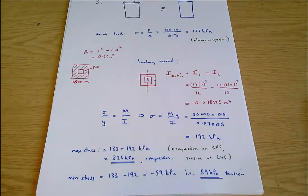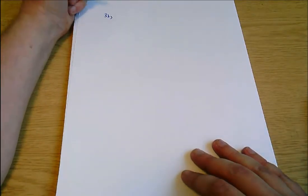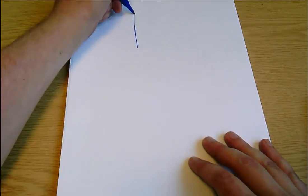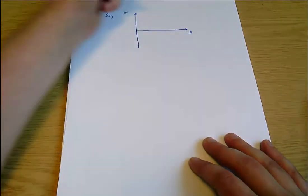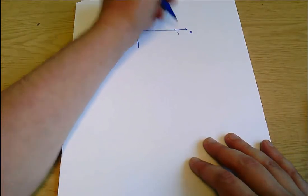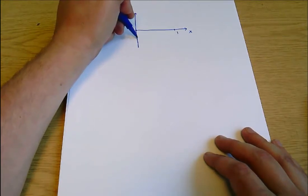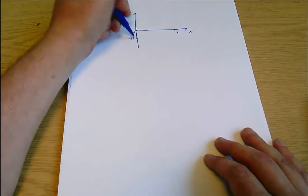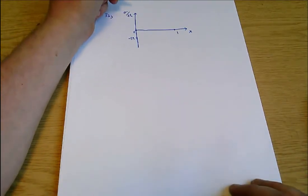And that is 3a done. 3b is quite quick then. 3b says plot the graph of stress distribution across the column as a function of distance from the left hand edge. So we have sigma the stress and we have x the distance from the left hand edge, which goes from 0 here to 1 meter here. The column's 1 meter across.